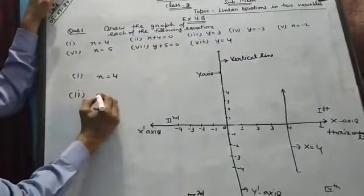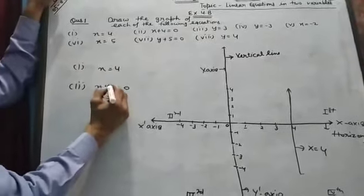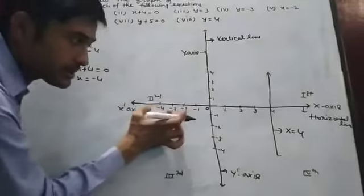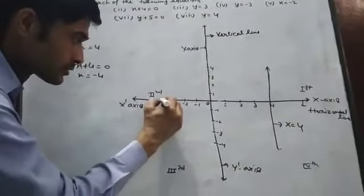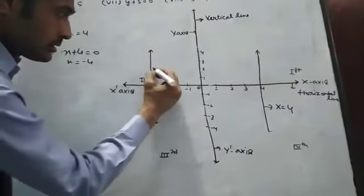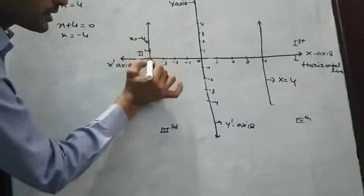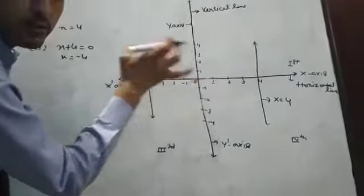Same as showing x plus 4. x plus 4 is 0, so x is minus 4, x minus x this side. So this case is x equal to minus 4, and this is also parallel to y-axis.